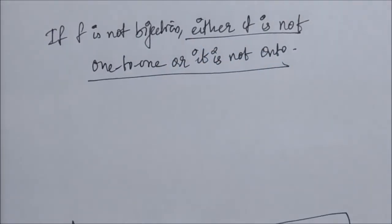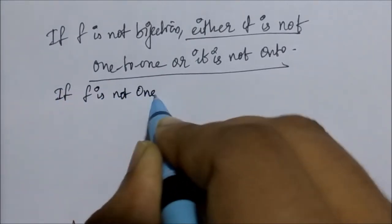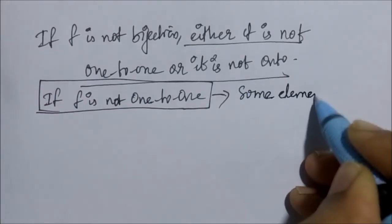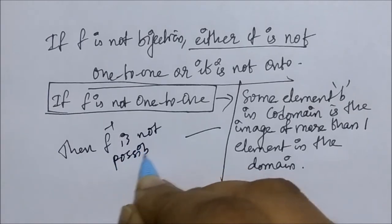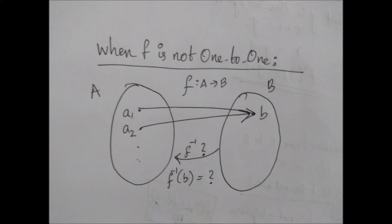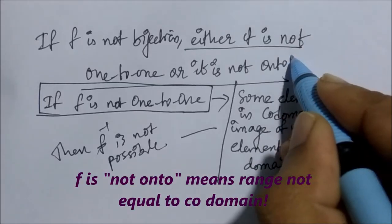Suppose f is not a one-to-one function, meaning some element b in the codomain is the image of more than one element in the domain. If we try to define f inverse by mapping elements of set B back to set A, we would have to assign more than one value to that element — but a function cannot assign more than one value to any element, so we can't define an inverse.